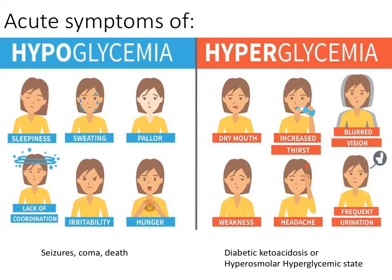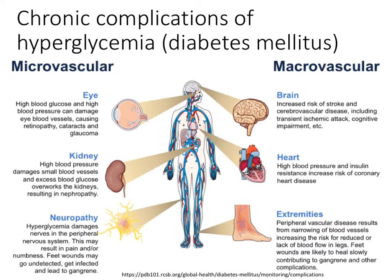Severe hypoglycemia is acutely deadly, as well as extreme hyperglycemia, causing either diabetic ketoacidosis or a hyperosmolar hyperglycemic state. Blood glucose levels above about 100 mg per deciliter chronically also causes damage throughout the body, as summarized here. There are problems in the microvasculature, affecting the eye, kidney, and nerves, as well as the macrovasculature, affecting the brain, heart, and extremities.